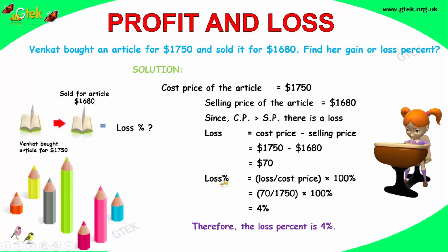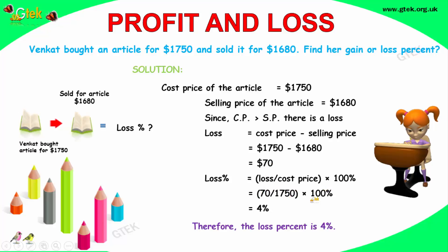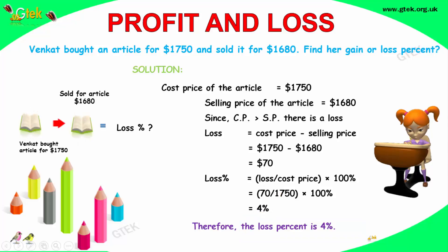The loss percentage is loss divided by cost price into 100. Loss is $70 and the cost price is $1750, into 100, you get a loss percentage of 4%.